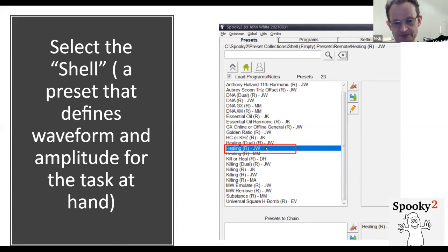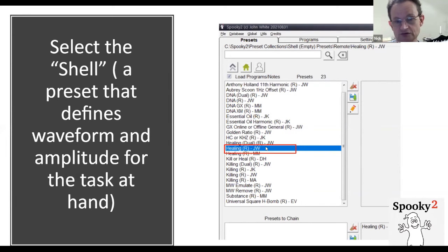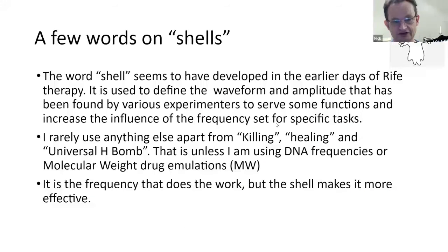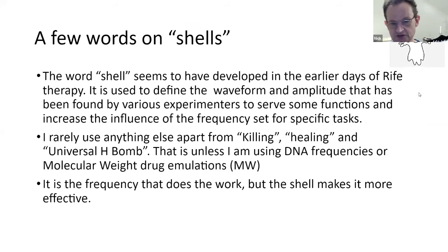When you have a frequency set from the database or from biofeedback and you're unsure whether to use healing or killing, putting it through the healing shell will be easier on the body and will still do pathogen killing — because it is the frequency which does the killing more than the shell. The shell just makes it a little more targeted to a particular function. So the flow is: Shell Empty Presets → Remote → Healing. It's the frequency that does the healing and killing; choosing a good shell makes it easier to get the result you're after.